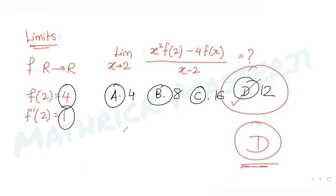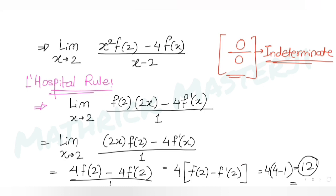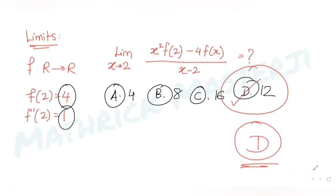This was a straightforward question. We substituted x = 2, got the indeterminate form 0/0, applied L'Hôpital's rule to differentiate the numerator and denominator separately, then substituted x = 2 again to get the final answer of 12.